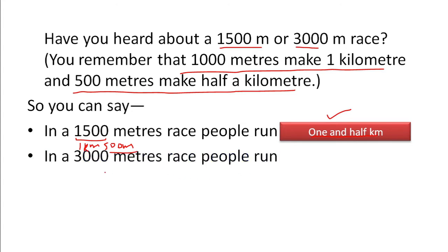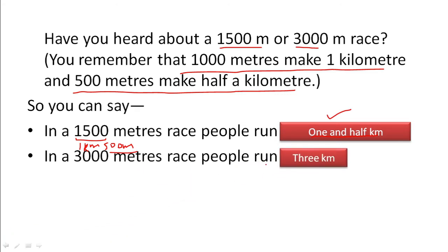In a 3000-meter race, people will run 3 kilometers. I have a separate video on this conversion — if you have not seen it, you will find the link in the i-button above.